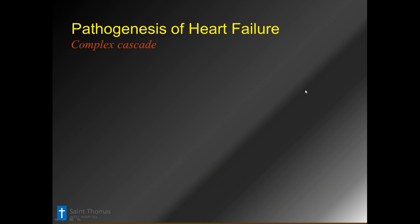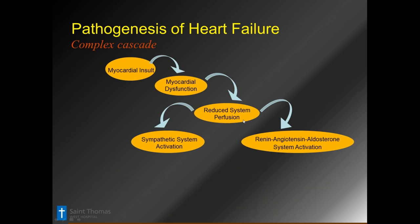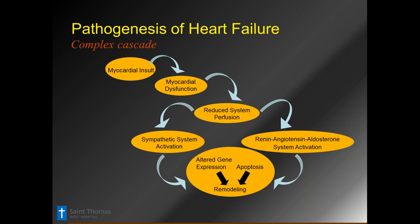It's a complex cascade: some type of insult to the myocardium leads to myocardial dysfunction, systemic perfusion and oxygen transport problems, then sympathetic activation with renin-angiotensin and drugs like spironolactones to inhibit that spiral. At the end of the day, it starts altering gene expression and the LV starts remodeling. Remodeling is a structural or geometric term — not a functional term. What you're really talking about is how big the preload is, how big the ventricle is, how small it is on systole, and how spherical or rounded it is.